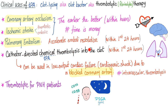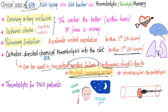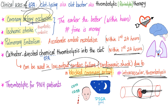Catheter-directed chemical thrombolysis delivers TPA directly into the clot. For example, if an artery has a clot, we introduce a catheter into the clot and the catheter delivers TPA — a fibrinolytic drug — which lyses the fibrin. Again, the earlier the better. This can also be used in low-output cardiac failure and cardiogenic shock due to a blocked coronary artery, when the artery is occluded. We call this intravascular thrombolysis.